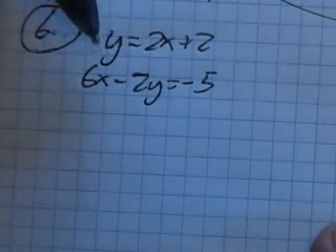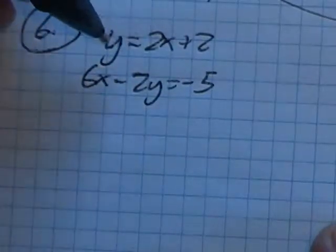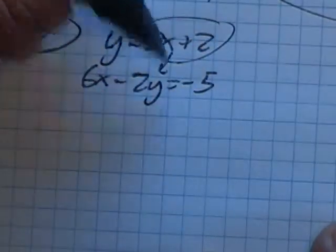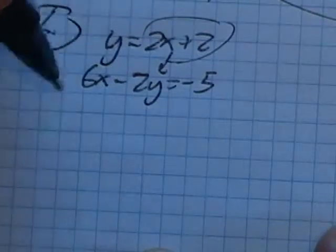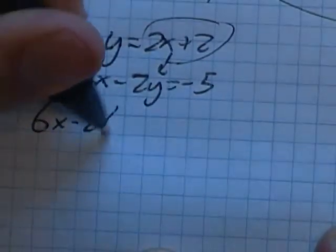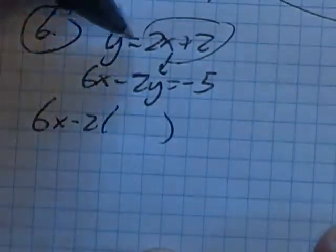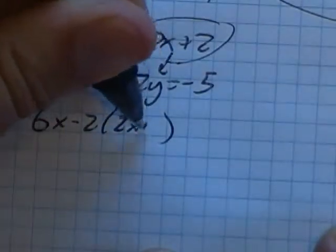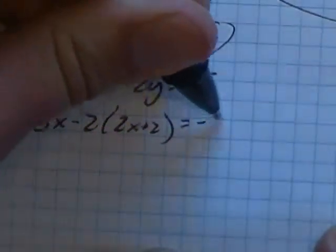This is already set up for substitution. Notice that y is equal to that, so that can take the place of y. I'm gonna rewrite this as 6x minus 2 times y. What is y? 2x plus 2. That equals negative 5.